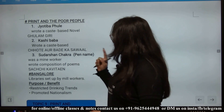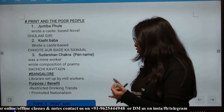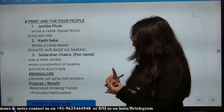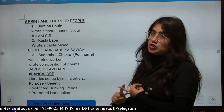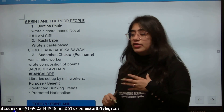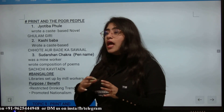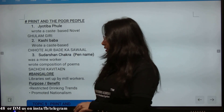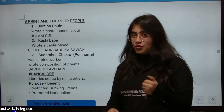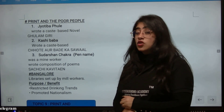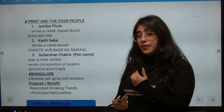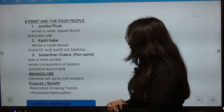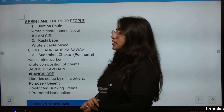In Bangalore, a library was set up for mill workers. Its purpose was to restrict drinking trends and promote nationalism. Drinking was targeted because liquor was handled by the East India Company. So at that time, foreign goods were boycotted — liquor was rejected and nationalism was promoted.